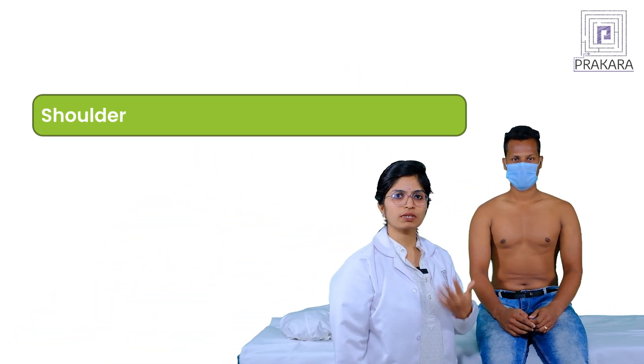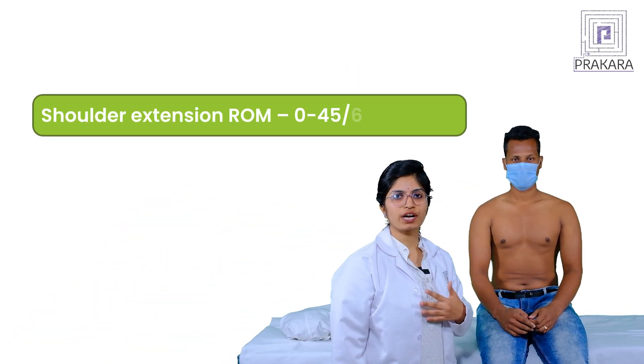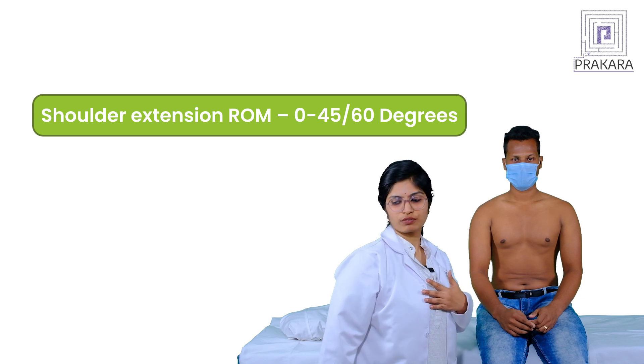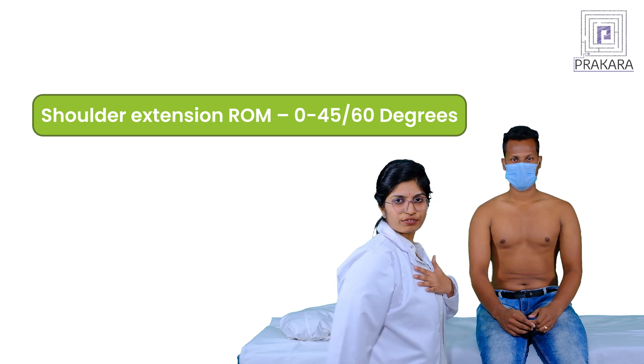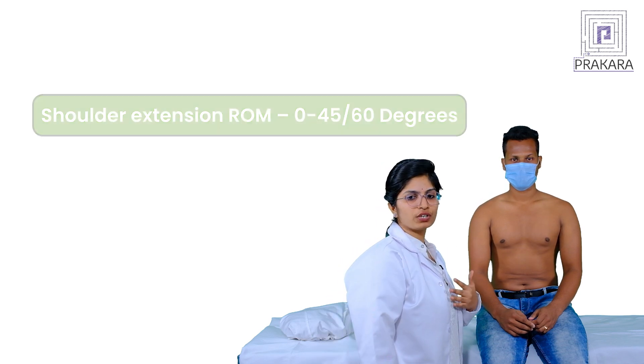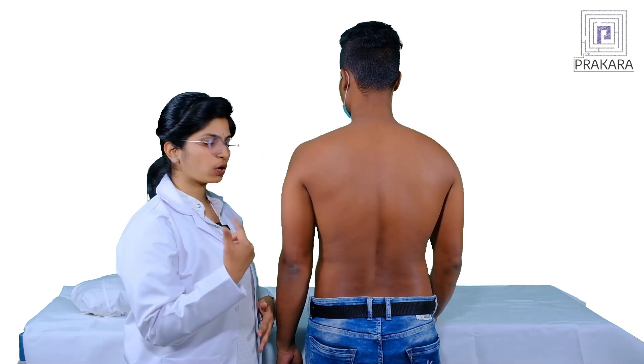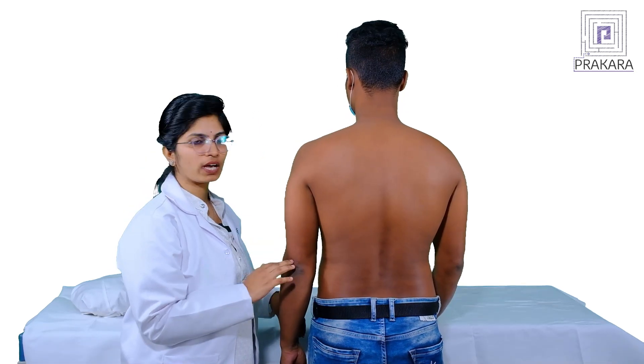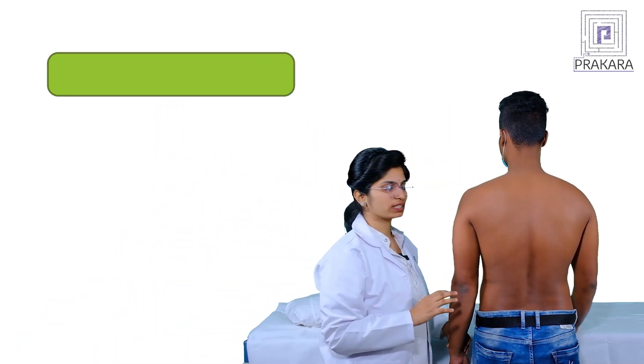Coming to the second movement: shoulder extension. Whenever we talk about shoulder extension, there is much controversy regarding the ROM. Mostly 0 to 45 degrees is considered as shoulder extension, though 0 to 60 degrees is also considered by some. As we have already talked about ROM, now I will be showing the muscles responsible for shoulder extension.